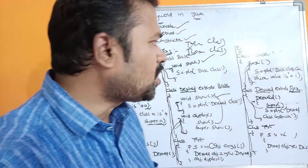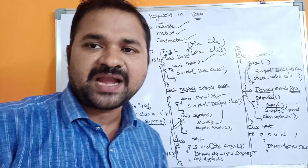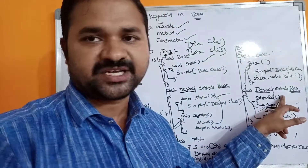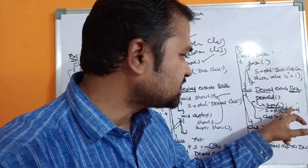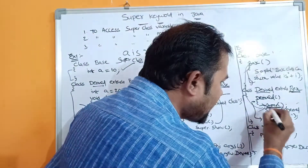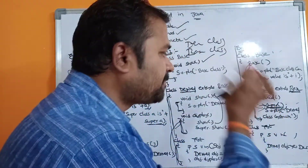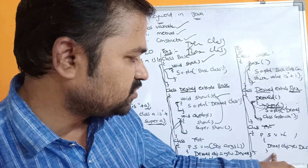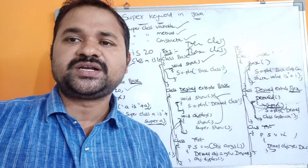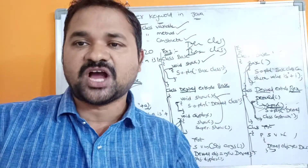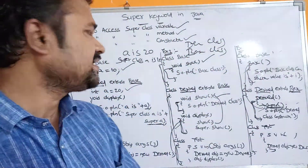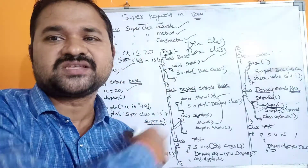If we want to call the super class constructor from the subclass, we must write this statement as the first statement of the subclass constructor: super() ends with semicolon. This is the super class constructor call and it must be the first statement of the subclass constructor. So this is about the super keyword in Java - we can apply the super keyword on a variable, on a method, or on a constructor, and with the help of super we can access all those things.